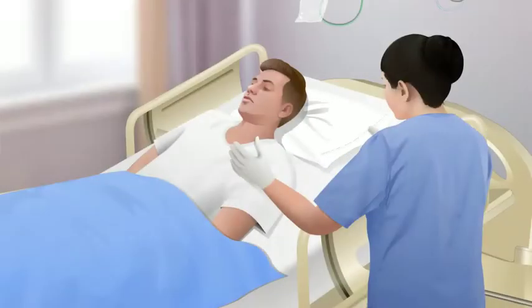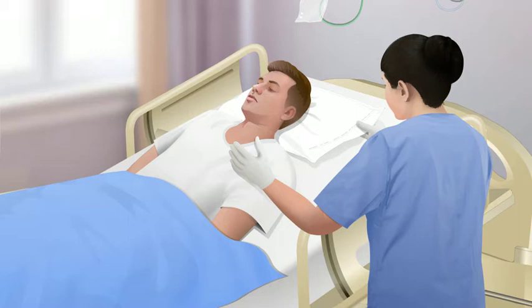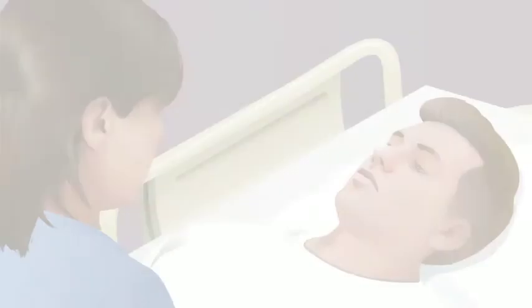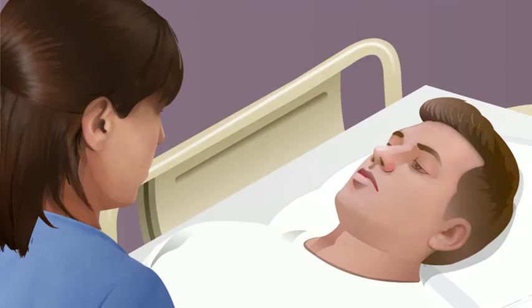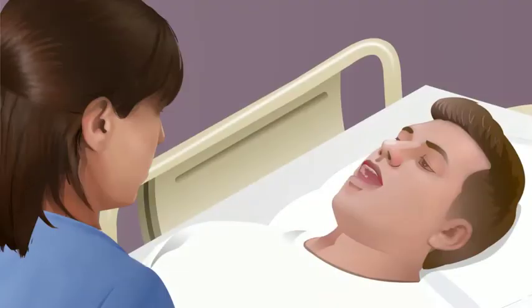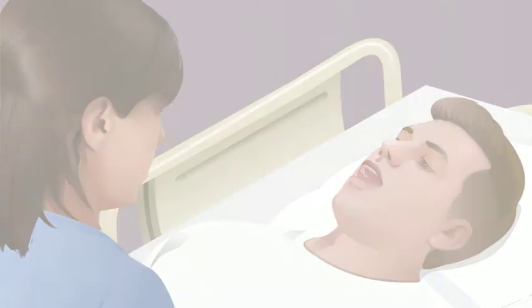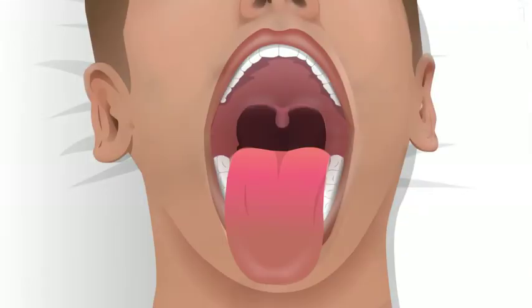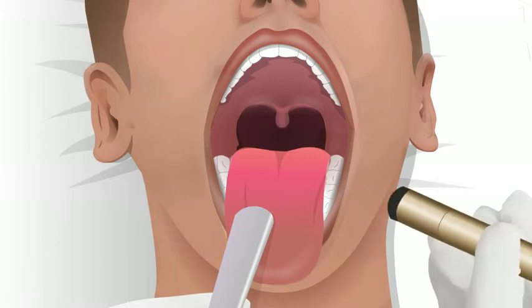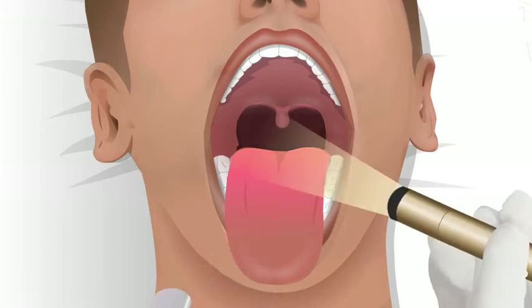Instruct the patient to tilt his or her head backward. If the patient is in bed, place a pillow behind his or her shoulders. Ask the patient to open his or her mouth and say 'ah.' Depress the anterior third of the tongue with a tongue blade and note any inflamed areas of the pharynx or tonsils. Illuminate with pen light as needed.